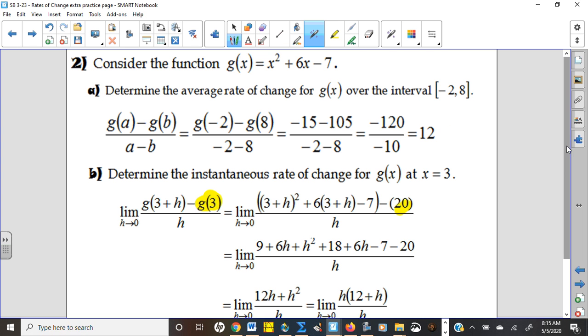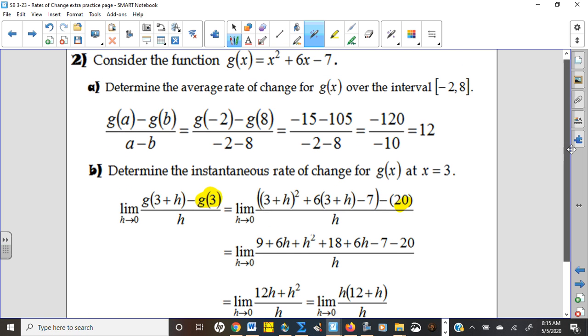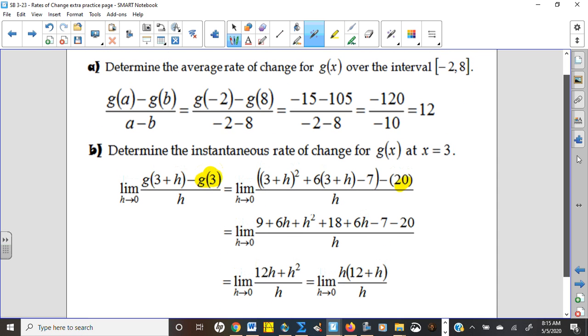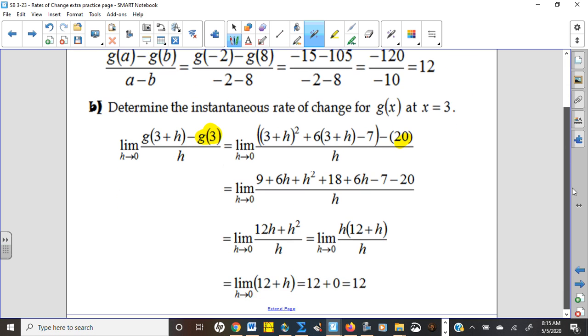Now, what is the instantaneous rate of change at 3? A lot of people would say, well, 3 is halfway between these, so if it's halfway between that average, shouldn't it be just the same as the average rate of change? Sometimes it is. Sometimes it's not. For quadratics, sometimes it will be because of quadratic growth, but in general, that's not going to be the case. So the fact that it worked out to be true in this case is kind of a coincidence.